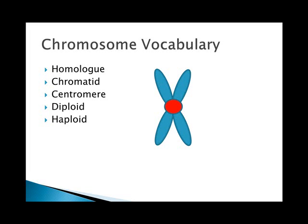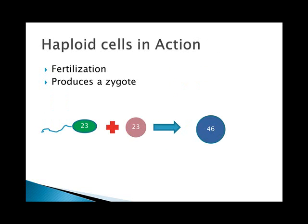A diploid, or 2N, cell is the complement of chromosomes found in zygotes and in somatic cells. In humans, the diploid number is 46. Haploid, or 1N, is the complement of chromosomes found in gametes. In humans, the haploid total is 23. Haploid cells have to be haploid because when you bring a sperm and an egg together, it produces a zygote — that process is called fertilization. You don't want the zygote to have more chromosomes than a normal somatic cell, so you have to half the number before you produce the sperm and egg.